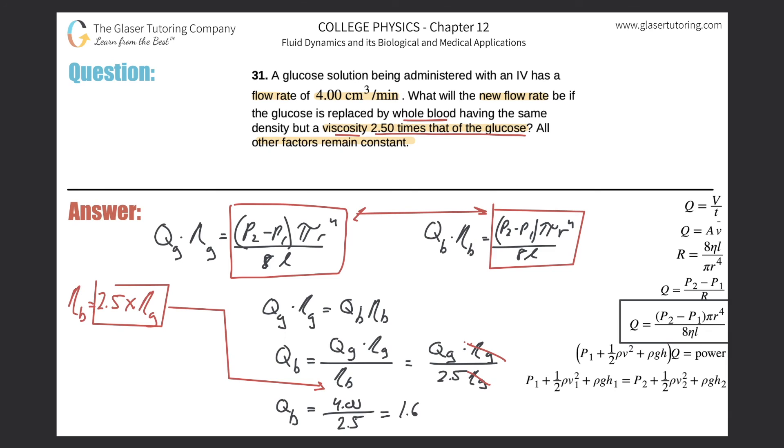So there's going to be 1.60 cubic centimeters per minute. So that will be the flow rate of the blood. And that should make sense. Again we just said before that the higher the viscosity, blood here has a higher viscosity than glucose, the higher the viscosity the lower the flow rate should be. So this should all make sense now.